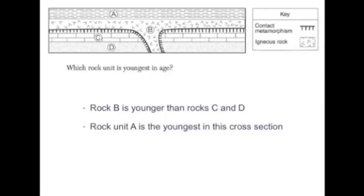In this cross section, rock unit B is younger than rock C and D even though parts of B are below the other units. This is because rock unit B is an igneous intrusion. It came after C and D. And after rock unit B reached the surface and hardened at the top, rock layer A was deposited. Therefore, rock layer A is the youngest in this cross section.